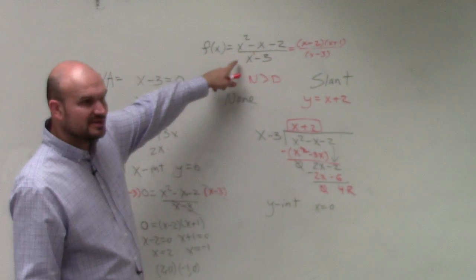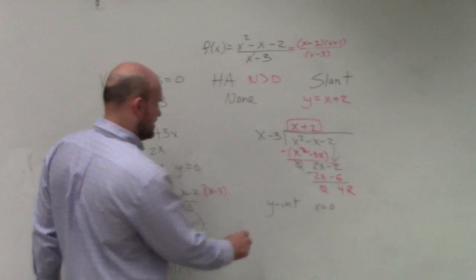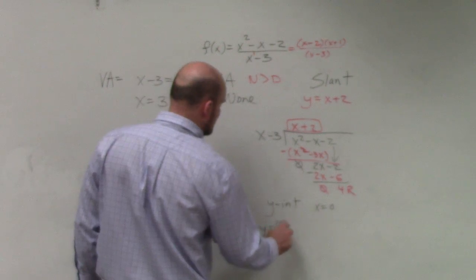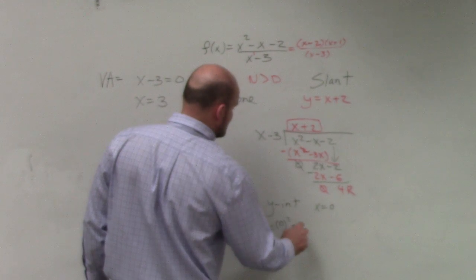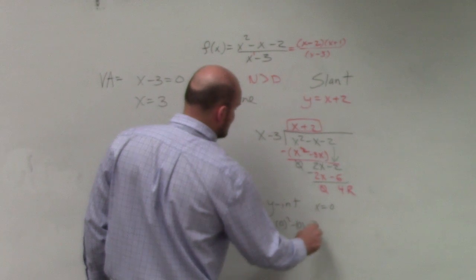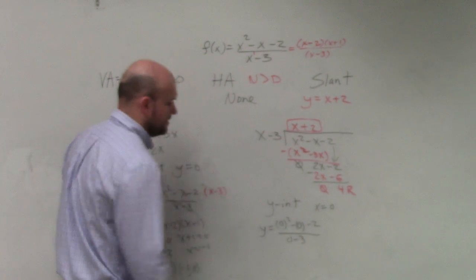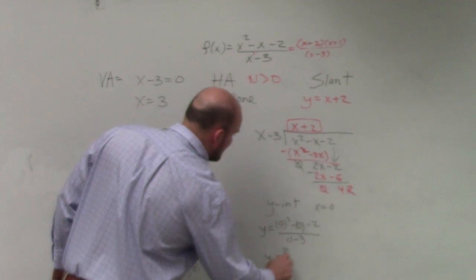So now, we're just going to set x equals 0. So I'll just, again, replace the f of x with y. And I'll just say 0 squared minus 0 minus 2, all over 0 minus 3, which gives me y equals positive 2 thirds.